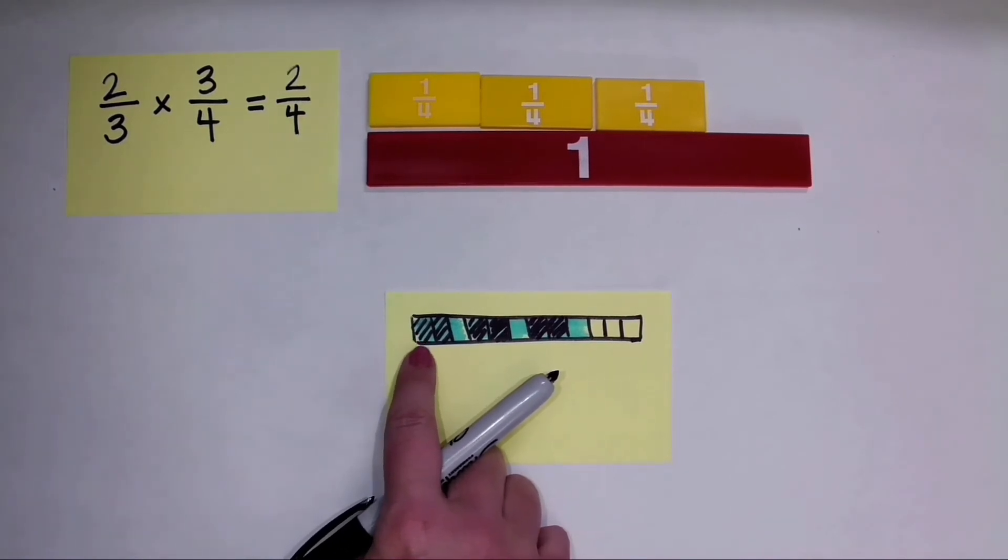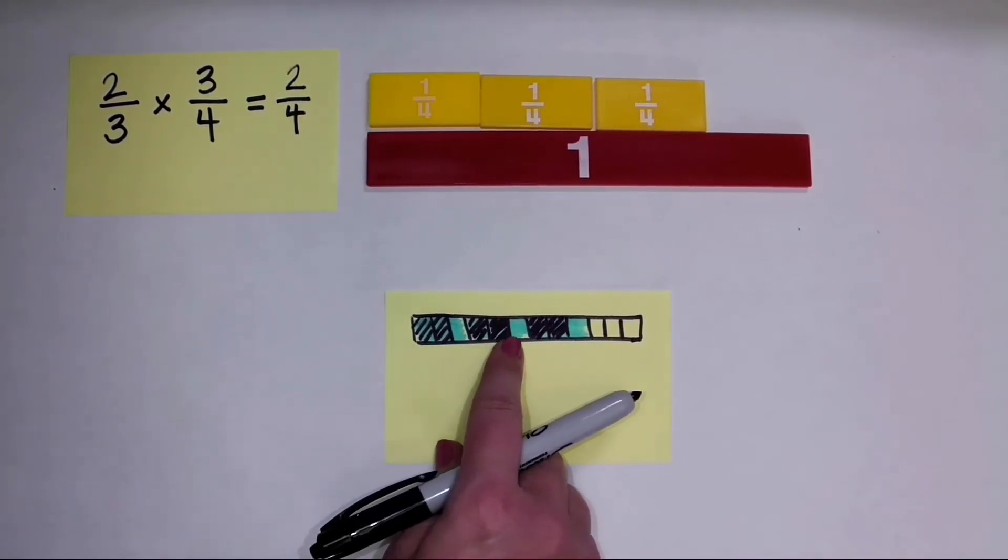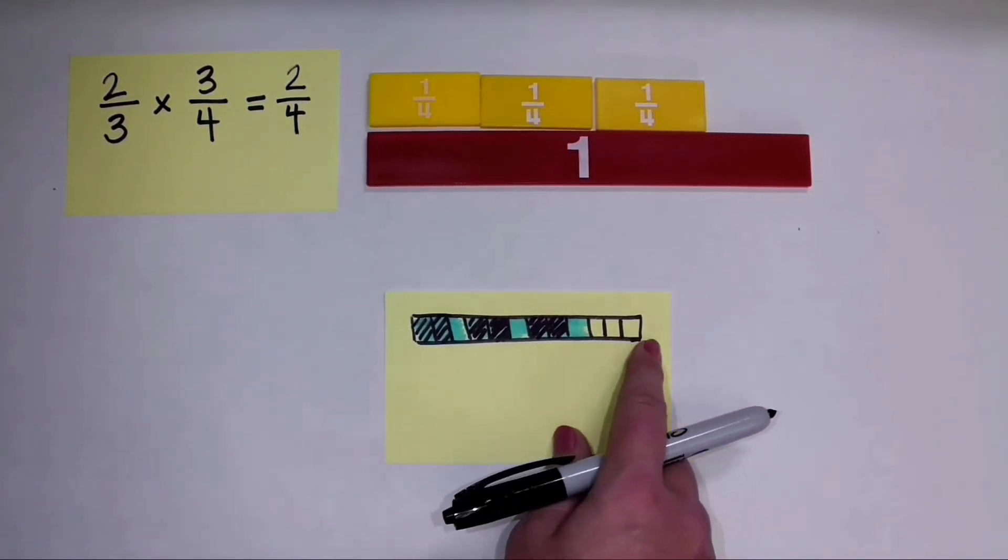So now I have a fraction with a denominator of 1, 2, 3, 4, 5, 6, 7, 8, 9, 10, 11, 12.